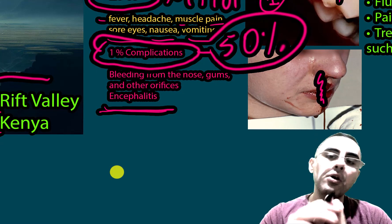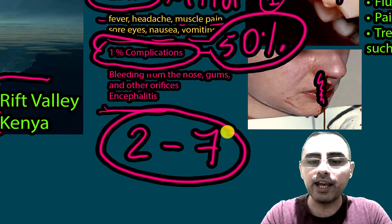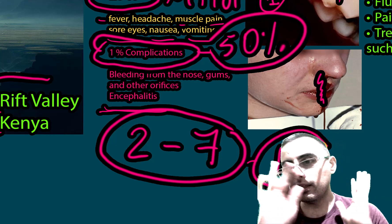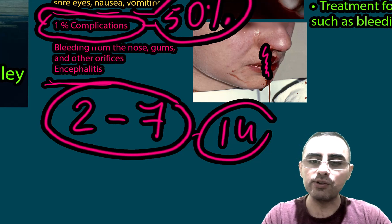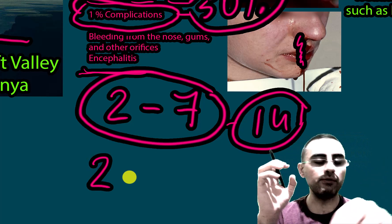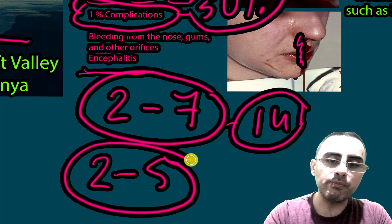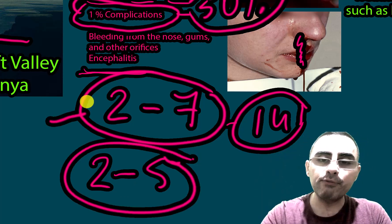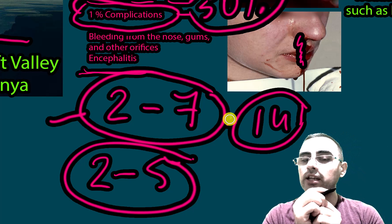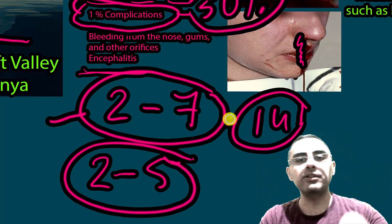How long does the disease last? Usually from two to seven days in mild cases. In severe cases it can last 14 days or much more, or it can cause death. The incubation period — from the mosquito bite to first symptoms — is around two to five days. Two to seven days is how long symptoms typically last. Complications can occur from day two up to day 14; after 14 days, complications usually will not occur.